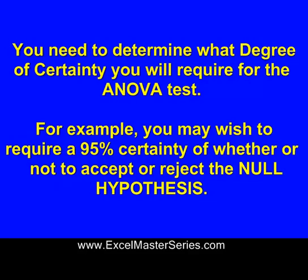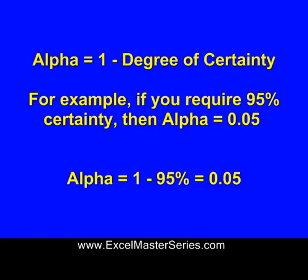You need to determine up front the degree of certainty that you're going to require from the ANOVA test. For example, you might wish to require a 95% degree of certainty whether or not to accept or reject the null hypothesis. Alpha is derived from the degree of certainty — alpha equals 1 minus the degree of certainty. So if you require 95% degree of certainty, then alpha equals 0.05.